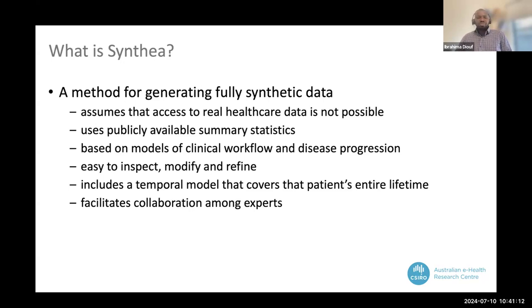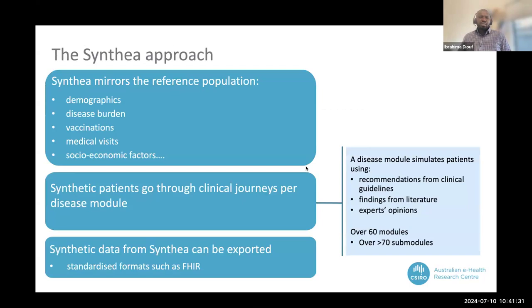Cinchia includes temporal models that cover the patient and trial life, and it facilitates collaborations — different people can easily collaborate and improve or build new modules because it's open source. Cinchia uses demographic data that are freely available, along with disease burdens such as prevalences of diseases, vaccination information, medical visits, and socioeconomic factors, all of which are mirrored into the synthetic data.